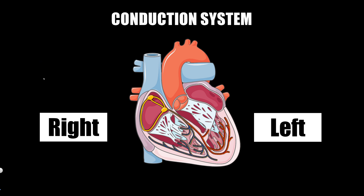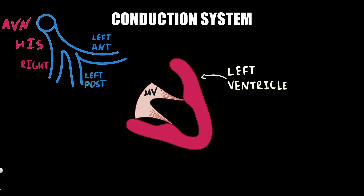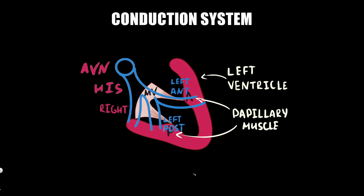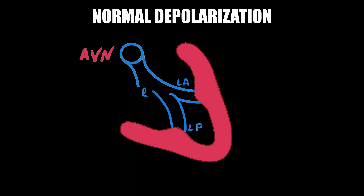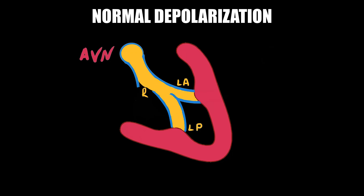The bundle of His divides into the right and left bundle branches. In turn, the main left bundle branch divides into several fairly discrete branches: the left anterior fascicle, left posterior fascicle, and in up to 65% of hearts, the left median fascicle. Left anterior fascicle normally initiates activation of the left anterior papillary muscle, the upper part of the septum, and the left ventricular anterolateral free wall. The posterior fascicle travels to the posterior papillary muscle and then to the posterior and inferior parts of the left ventricle. The left median fascicle initiates depolarization of the interventricular septum.